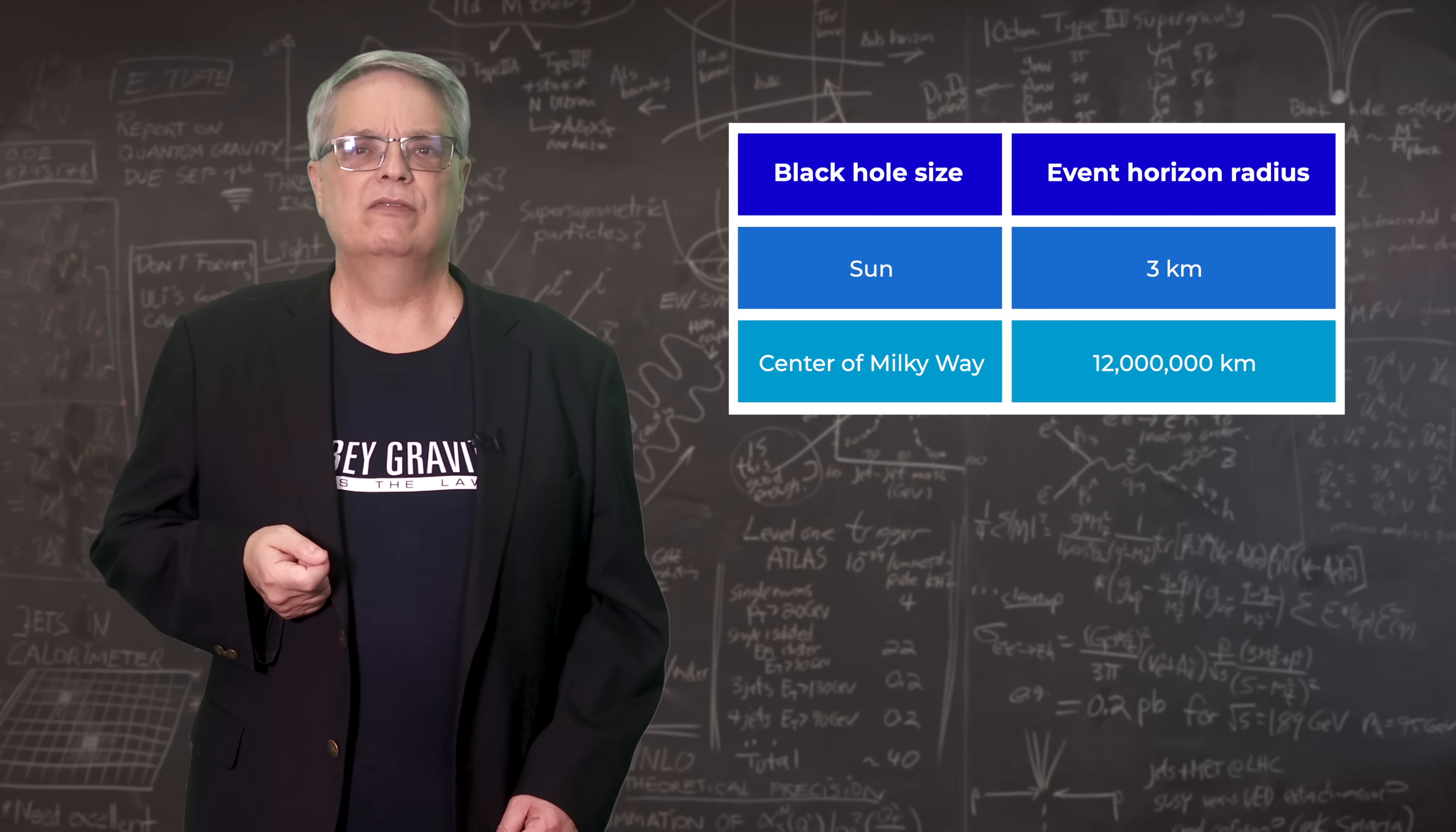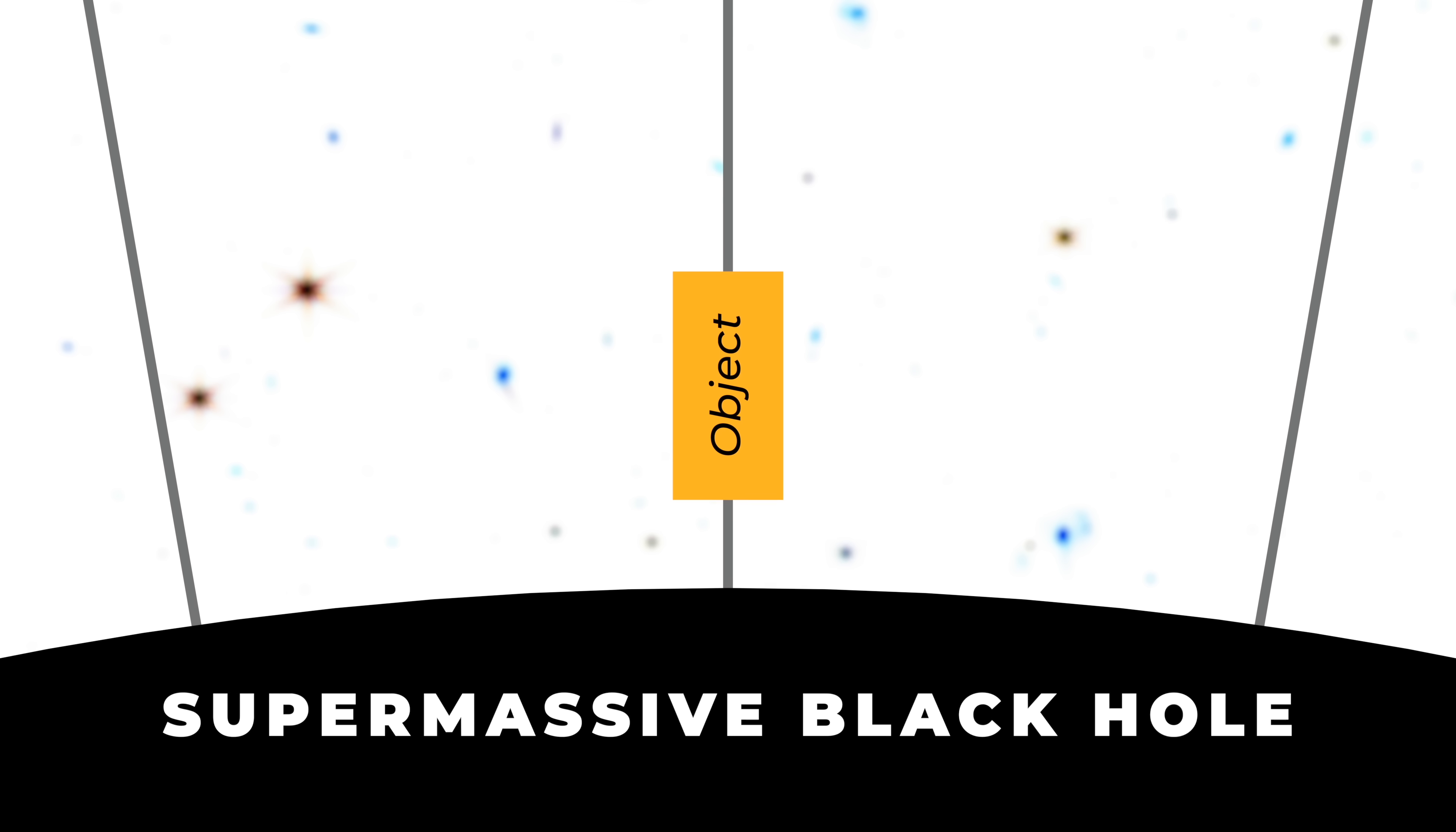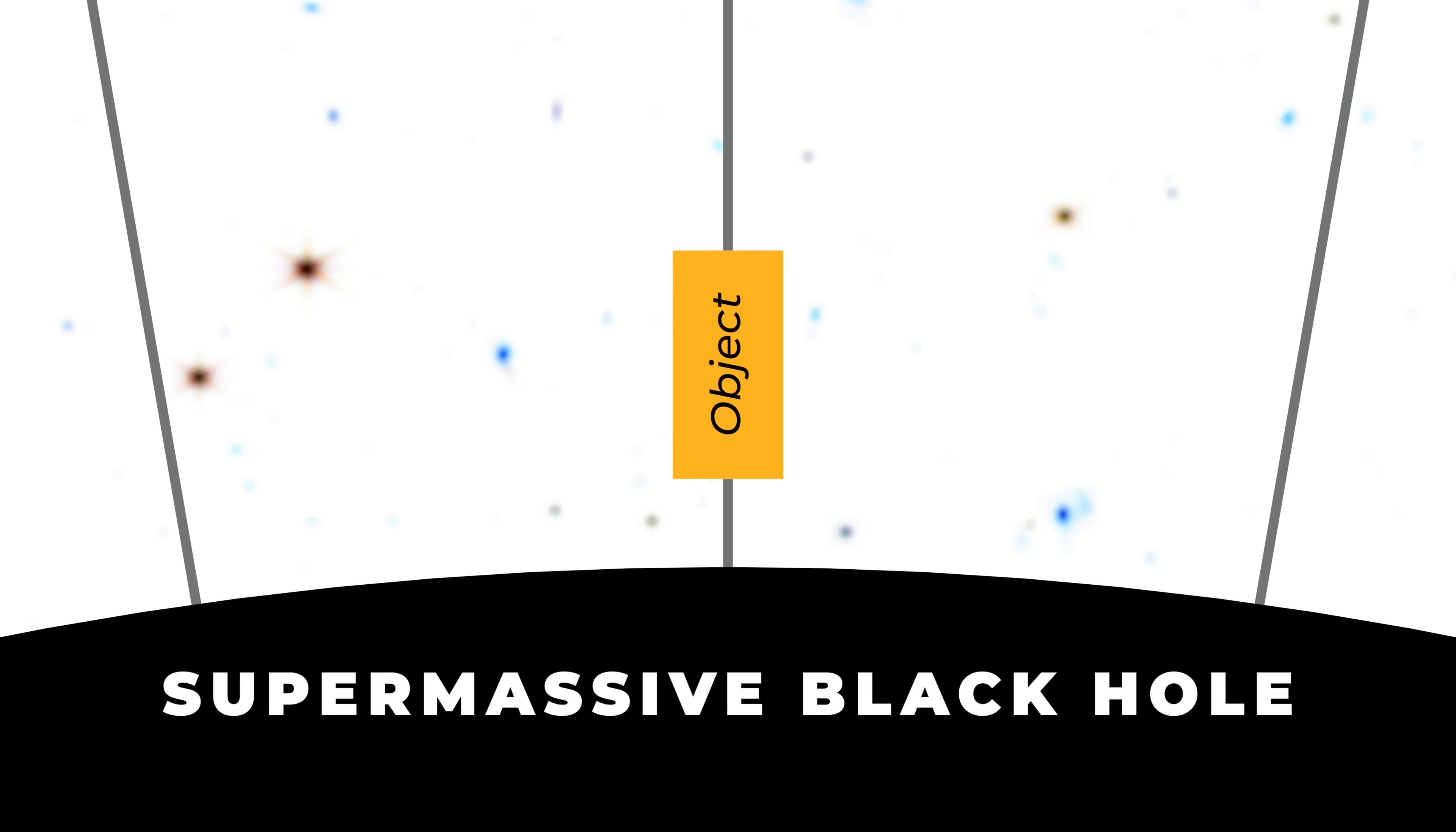The event horizon of the Milky Way's supermassive black hole is more like twelve million kilometers. This much bigger size means that even though the gravity exerted near the surface of a galactic black hole is the same as a smaller one, the gravity near a supermassive hole doesn't change as rapidly over short distances.